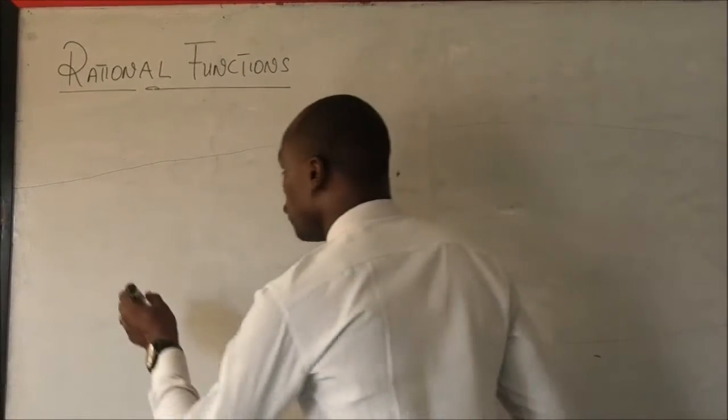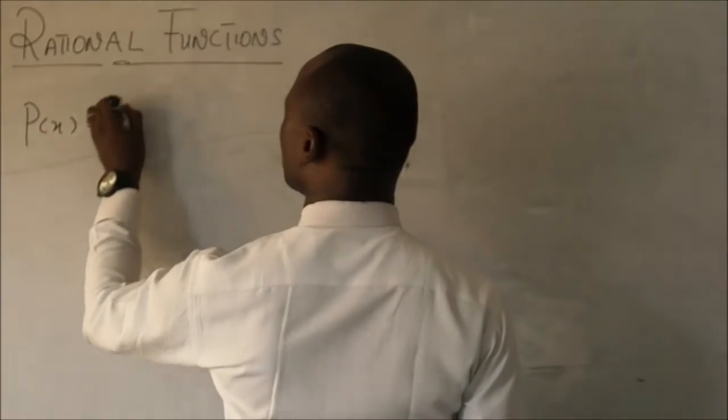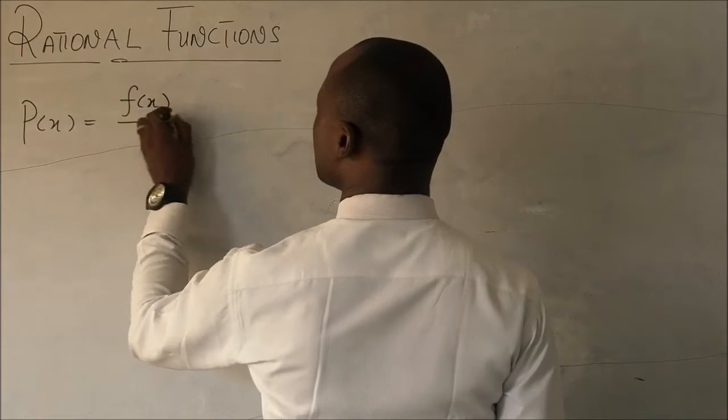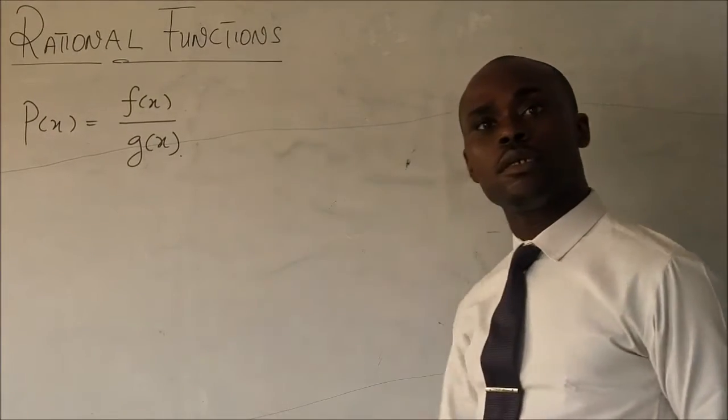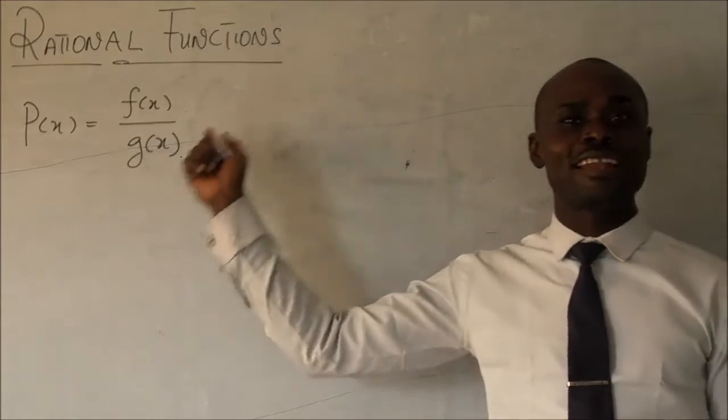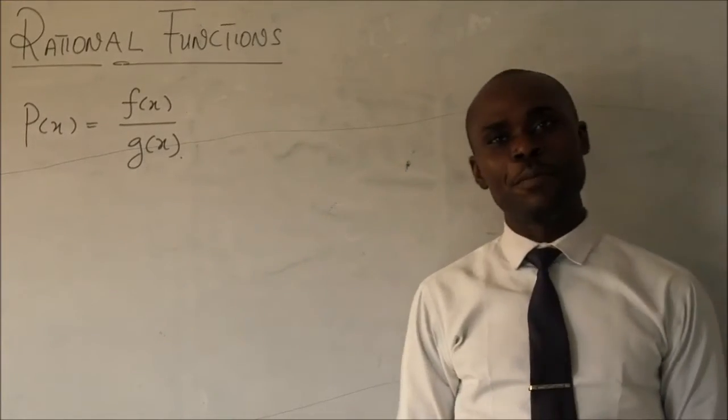A rational function is a function that looks like this: p of x equals f of x divided by g of x. It's more like a quotient, more like an upstairs and downstairs function where f of x and g of x may be polynomials.